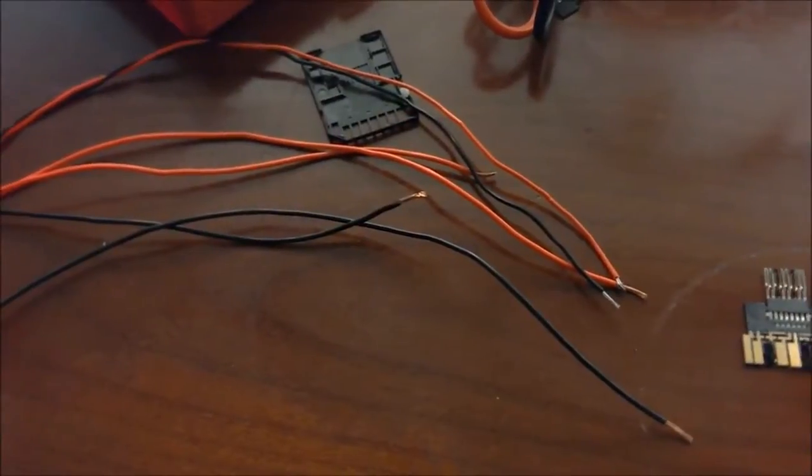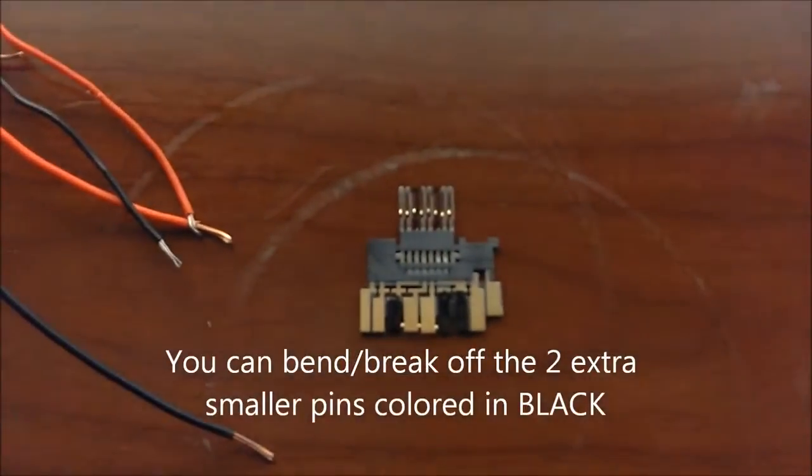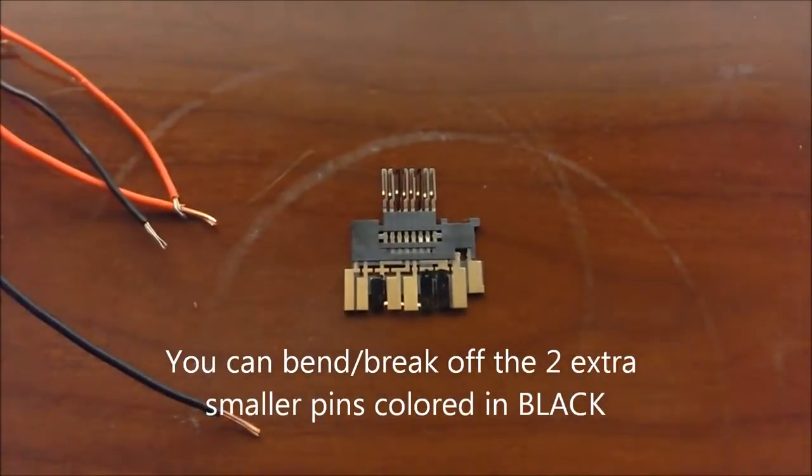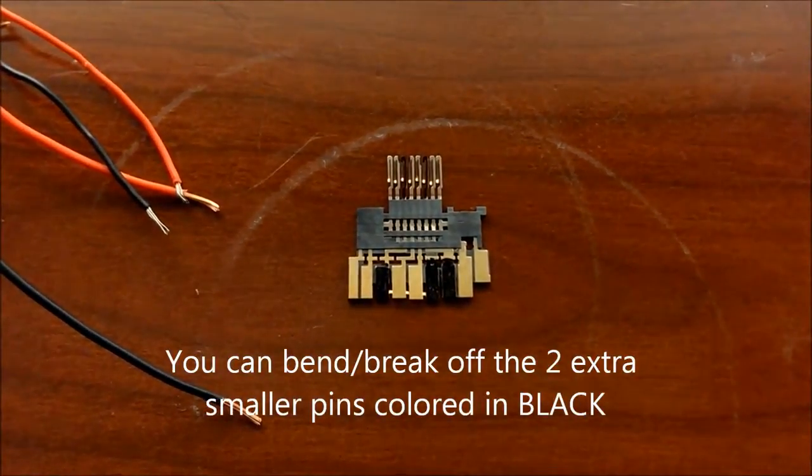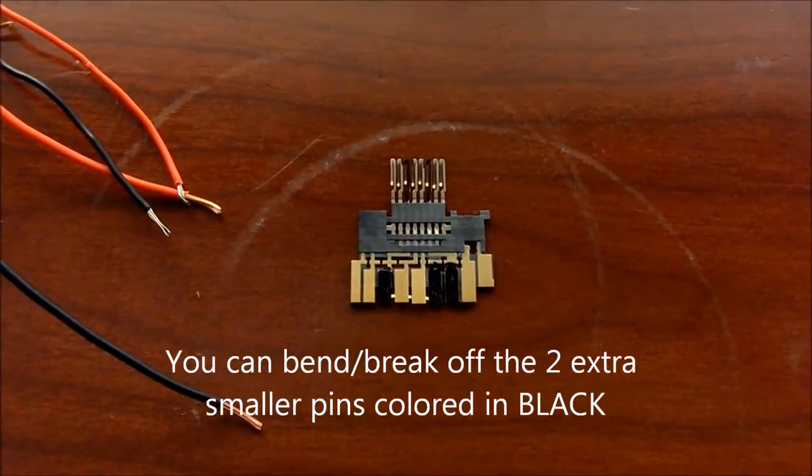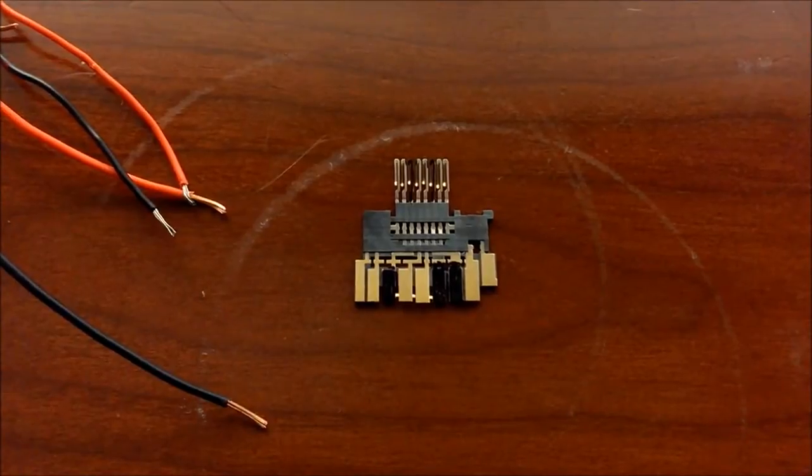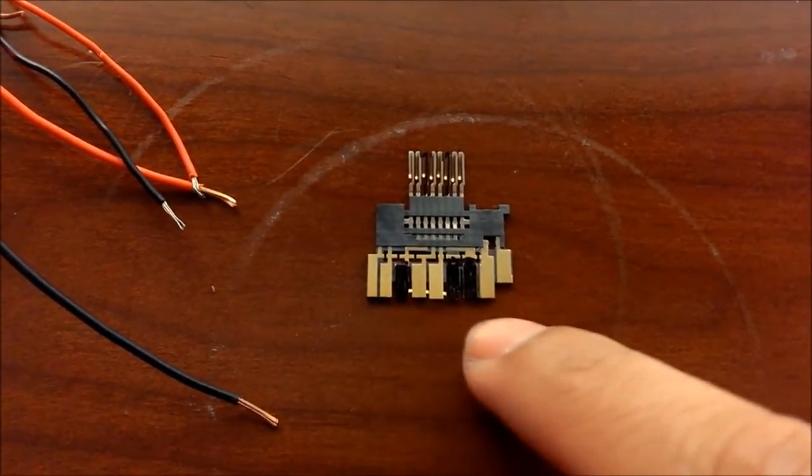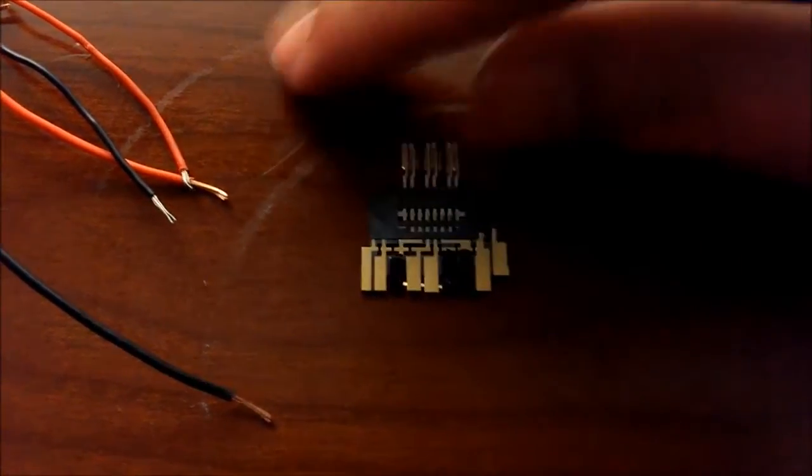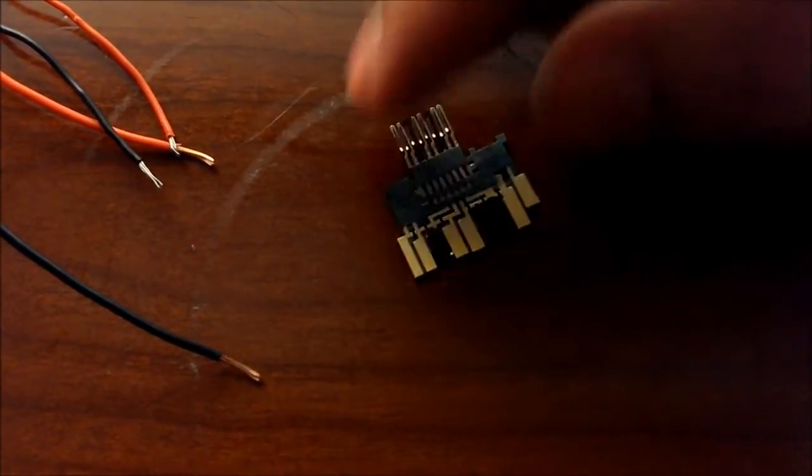So I have the extra wire here and I went ahead and marked off using a sharpie which pins I'm not going to be using. So as you can see on the bottom here there's 3 black pins and on the top there's 2 black pins. And that's because there's 2 pins on the bottom here that are actually joined together. So you can see the little bar going across those 2 pins.